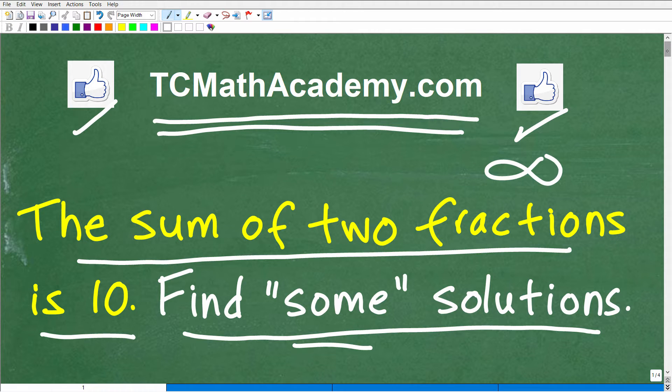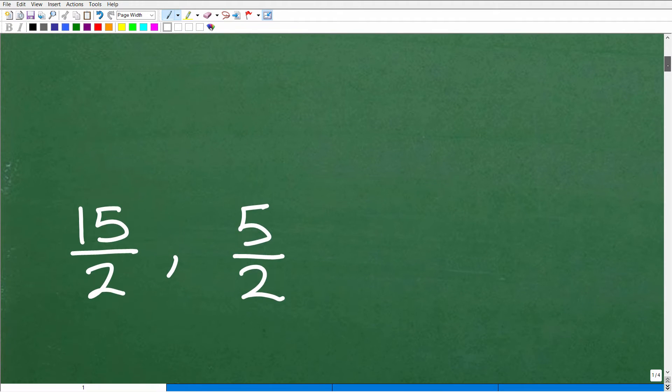All right, so let's take a look at two fractions. There's an infinite amount of fractions that could work, but these two fractions right here add up to 10. So how do we know that? In other words, how could we confirm that? Well, I have 15 over 2 and 5 halves.